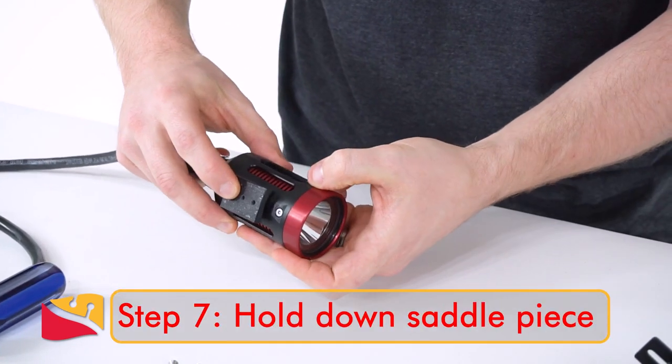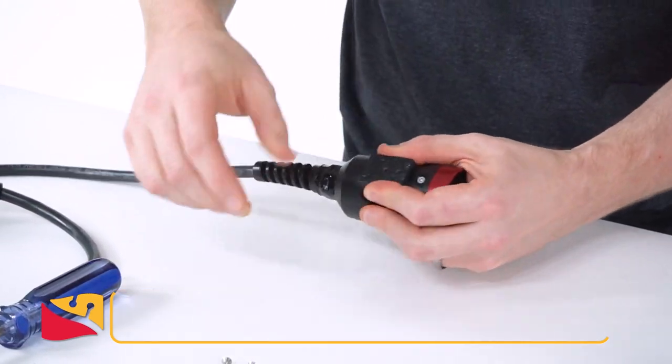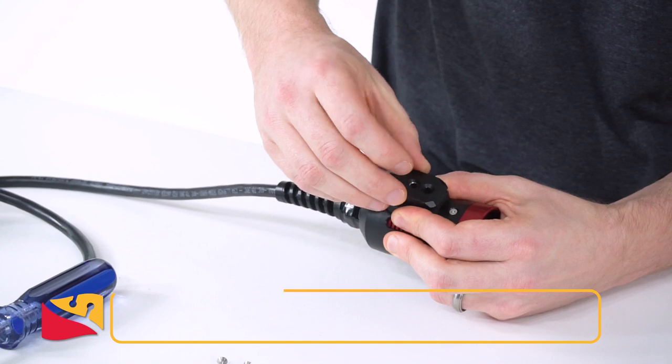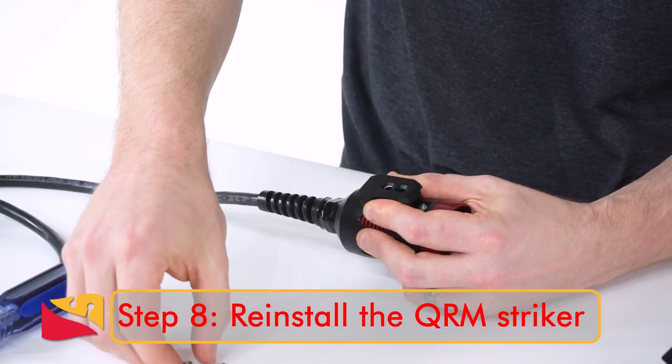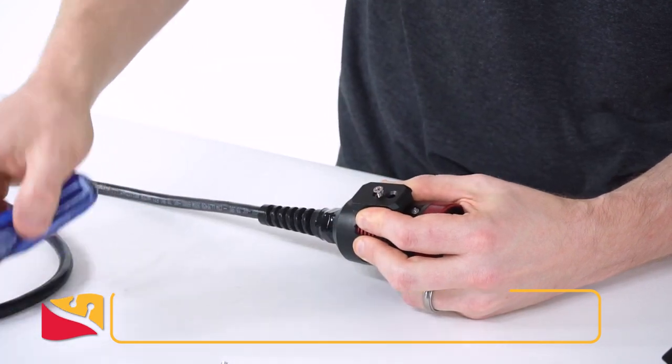Now you have to hold down the saddle piece against some of the spring pressure while you reinstall the QRM striker. Grab the QRM striker and install it with two screws. These holes should be closest to the front of the light.